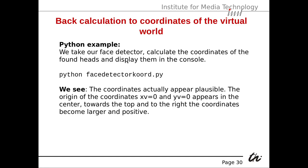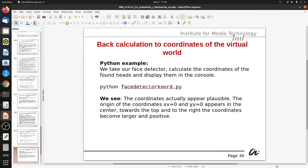So we can take our face detector, calculate the coordinates of the found heads, and display them in the console using face detector coordinate.py. This detects the face as before but also outputs the found coordinates. We should see that the coordinates appear plausible — XV equals 0 and YV equals 0 appear in the center towards the top, and to the right coordinates become larger and positive. If I move my head away, we should get a larger Z coordinate. Let's try that.